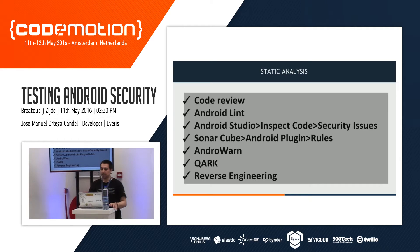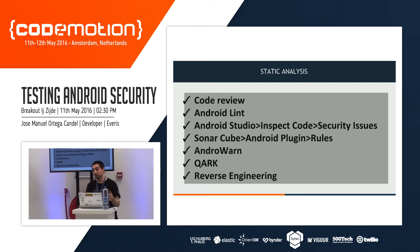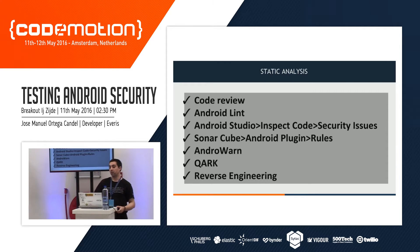For static analysis, these are the main points we can do in this phase. We can make a classical code review for the application — we will see some tools later. Other tools that can help for static analysis are Android Lint, for example, which is integrated in Android Studio. Android Studio also has integrated lint options for security issues in the source code. Another tool we have is SonarQube, which has a specific Android plugin with declared rules for the security of the application. We also have AndroidWard and QARK.